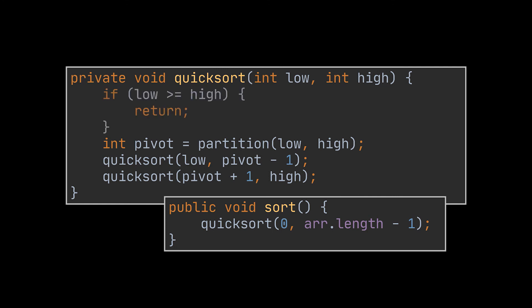This quick sort method isn't done yet — as with every recursive method, we need a breaking condition. The breaking condition, or if statement that will break us out of the recursive calls, is if the low index is greater than or equal to the high index. In this case, each subarray will be made of a single element, and there is no need to partition the subarray any further.